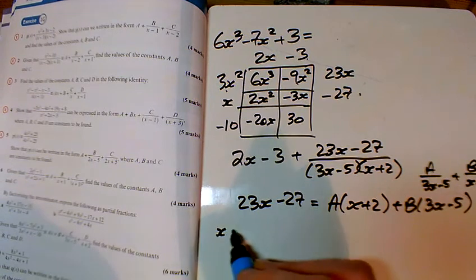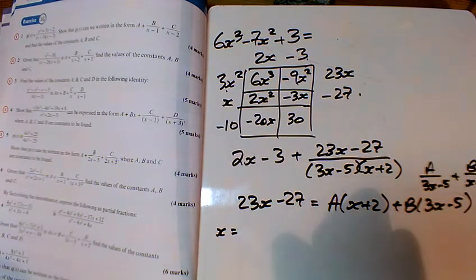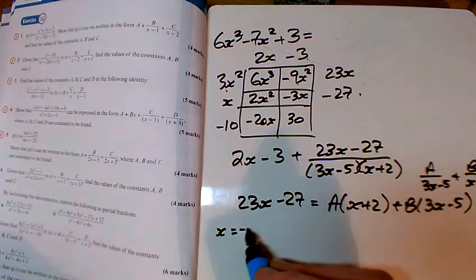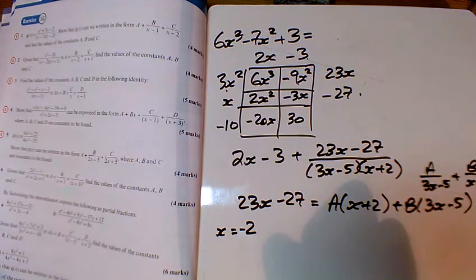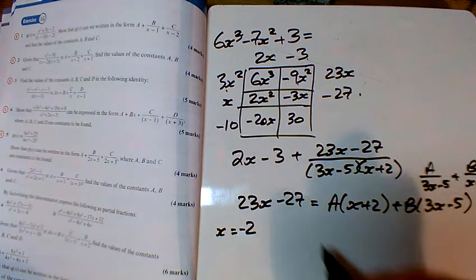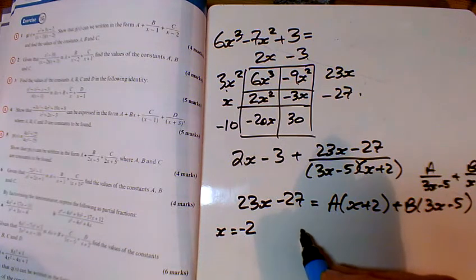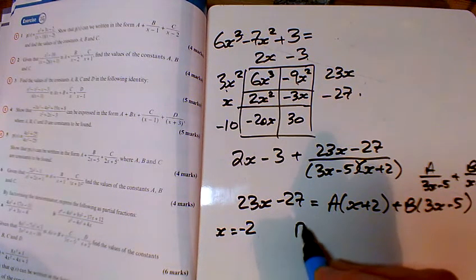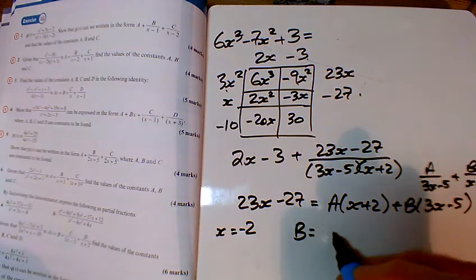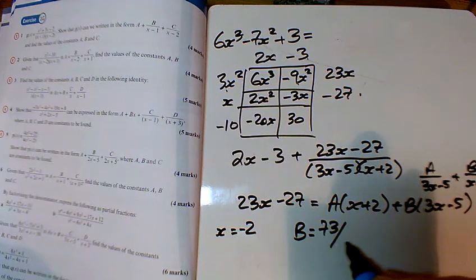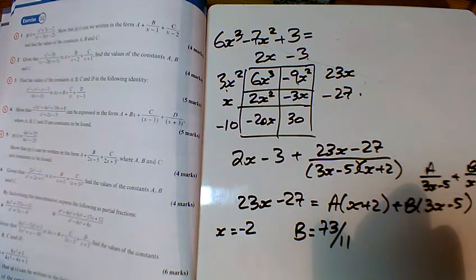This is what I don't like about this one - the numbers look like we've gone horribly wrong. If we put -2 into this, we get B = 73/11. I don't like that at all.